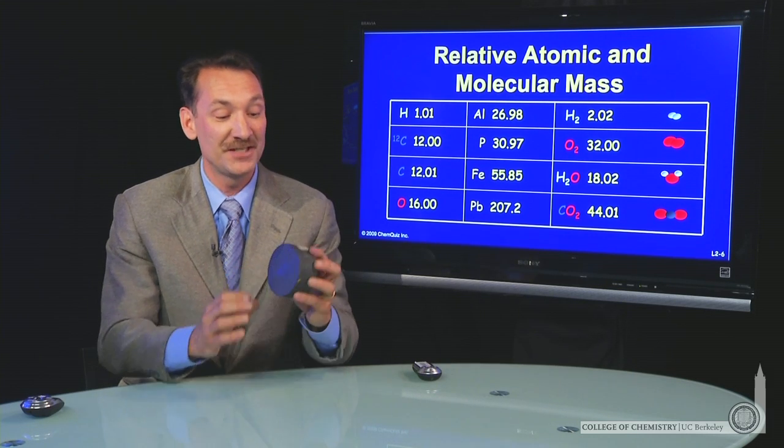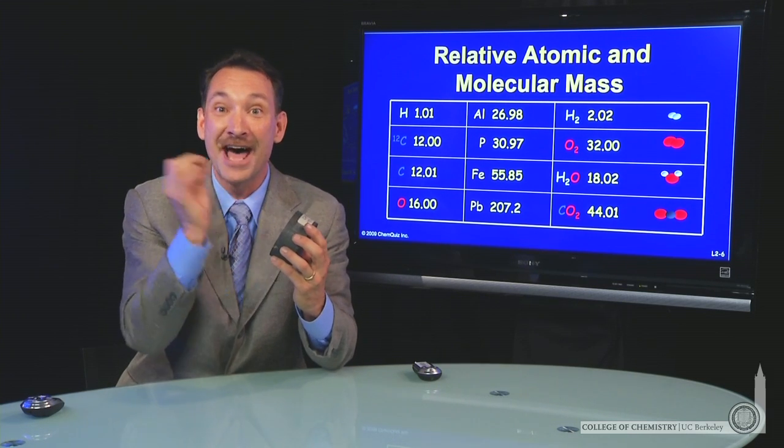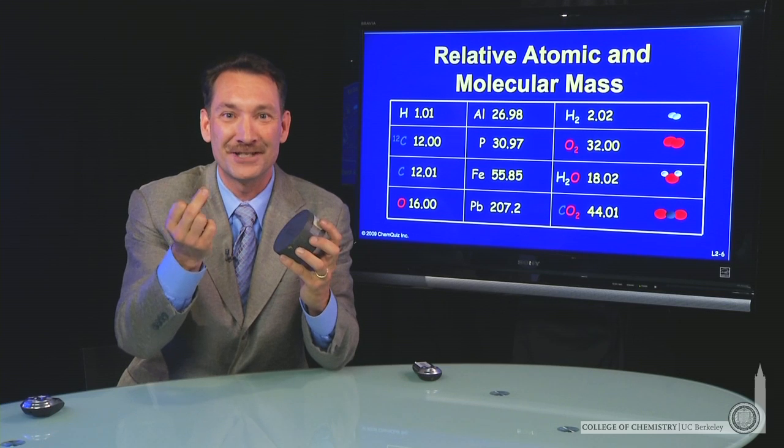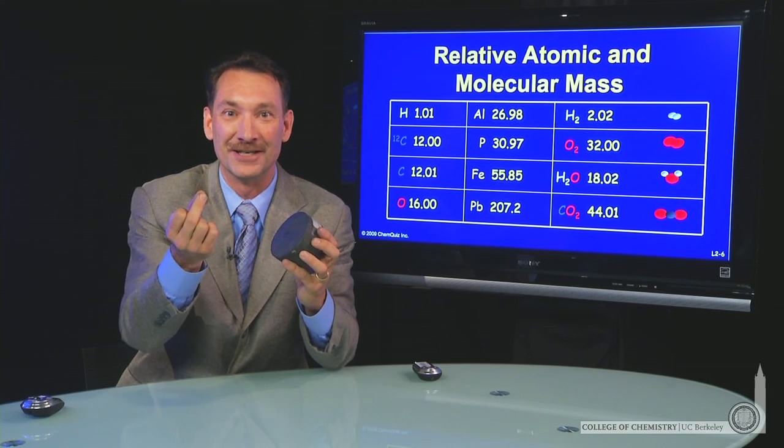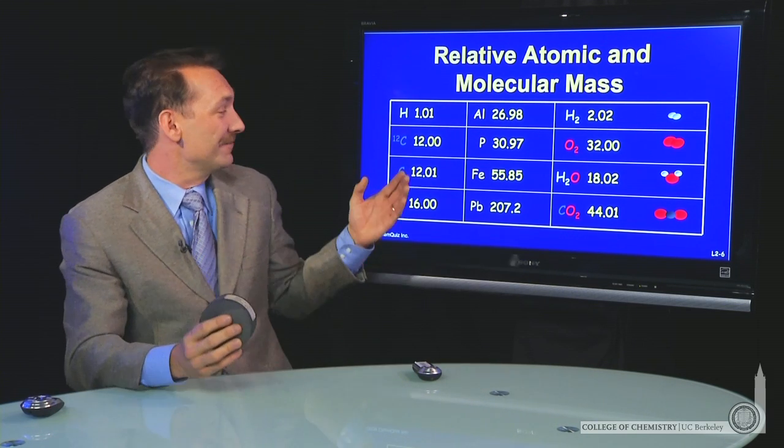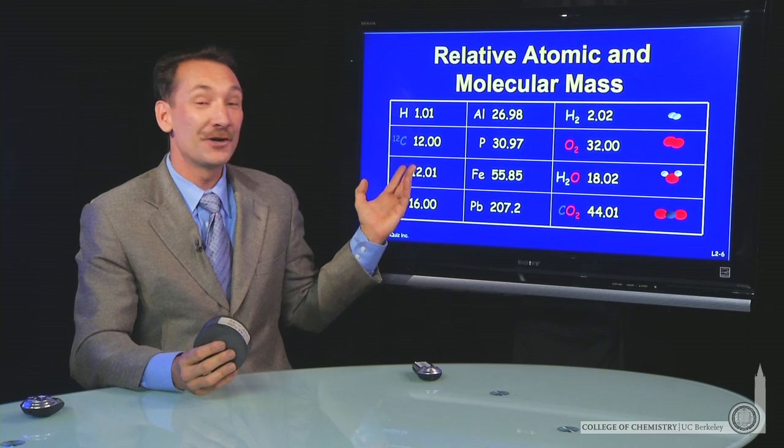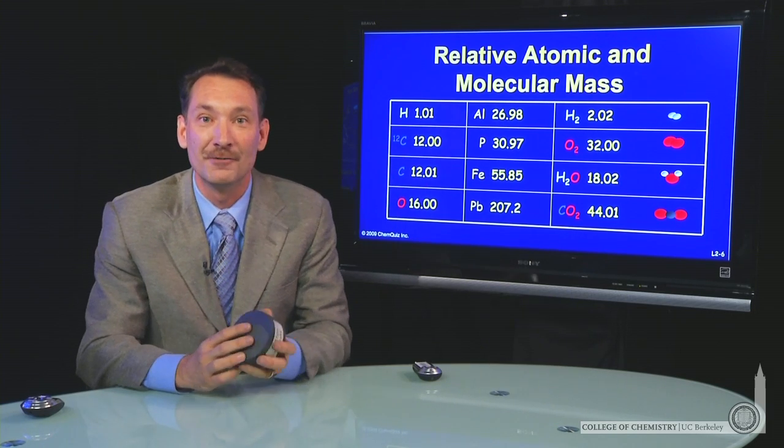So if I took this piece of carbon and I started picking out atoms, one in 100 would be that carbon-13 with a slightly more massive nucleus. That's what gives this naturally occurring carbon that slightly higher relative mass.